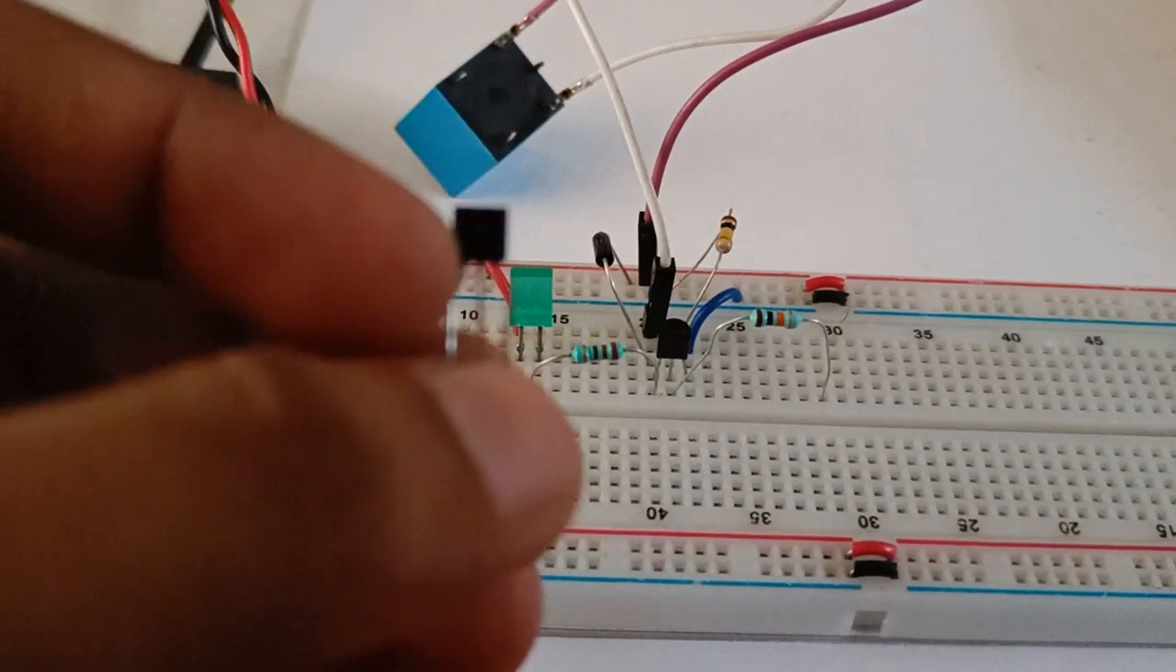This is a MOSFET. Instead of emitter, base, collector, there is gate, drain, source in a MOSFET. This is 2N7000, an n-channel MOSFET. If you're planning to use ESP8266 microcontroller, it's better to use a MOSFET when dealing with microcontroller pins which have multiple functions.